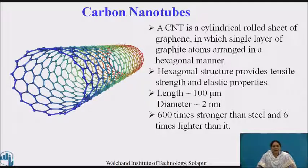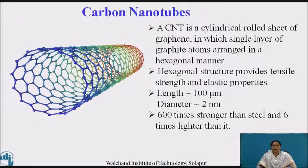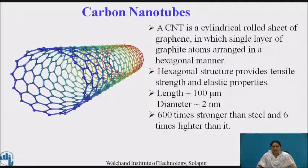When graphite sheets are rolled into a cylinder and their edges joined, carbon nanotubes are formed. Carbon nanotubes are the extended tubes of rolled graphite sheets arranged in a hexagonal manner. The hexagonal structure provides tensile strength and elastic properties. Length is 100 micrometers, diameter approximately 2 nanometers, and it is 600 times stronger than steel and 6 times lighter than it.